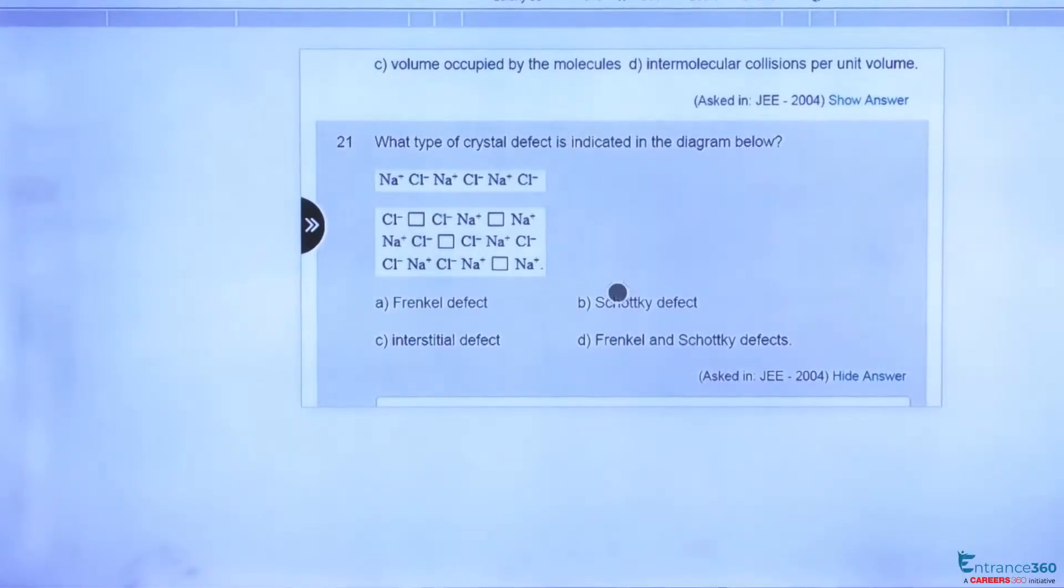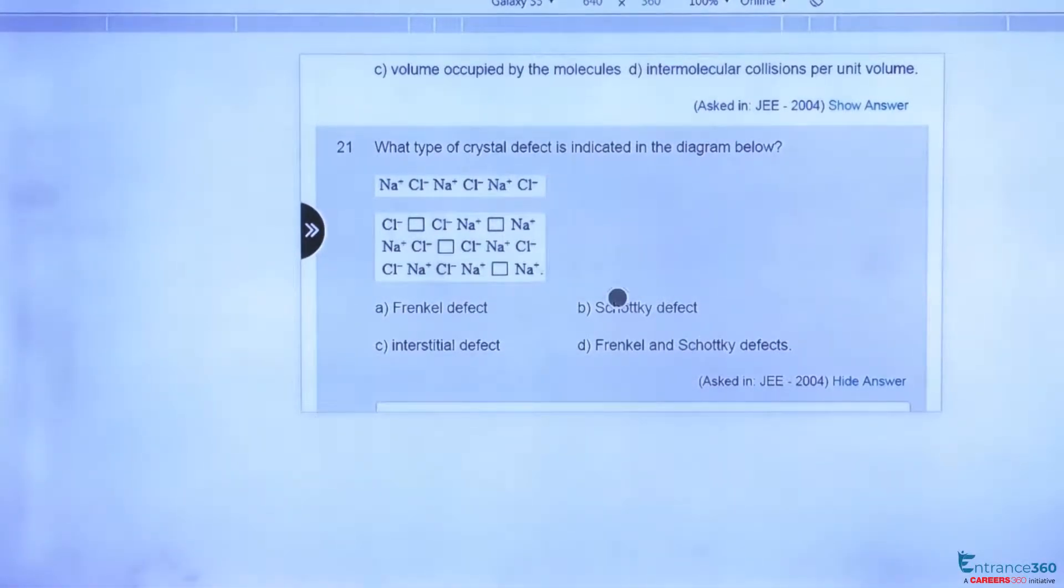Hello students, now we are going to solve a question which has been asked in JEE in 2004. As we can see the diagram here, there is a metal structure of NaCl.